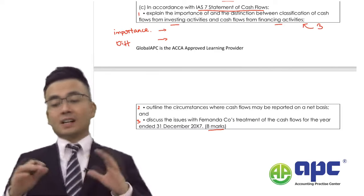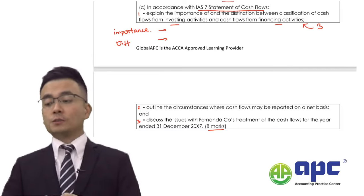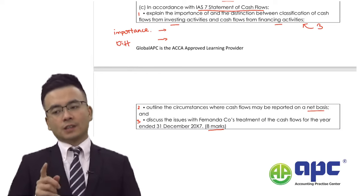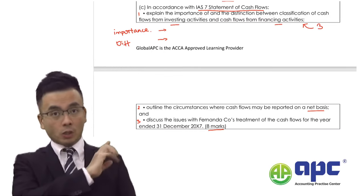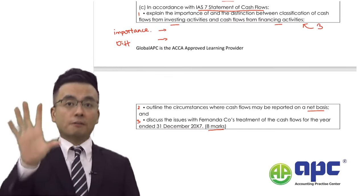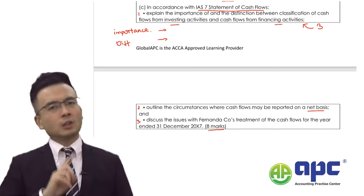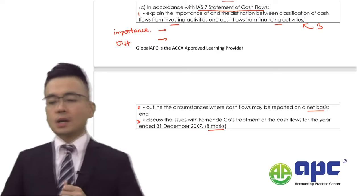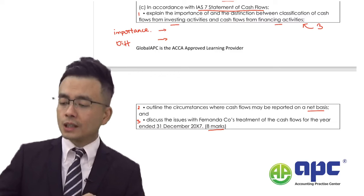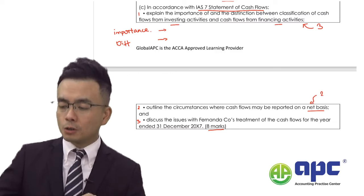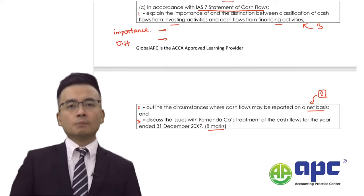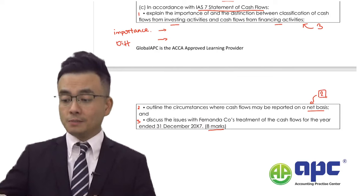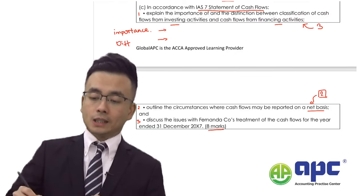Number two is to outline the circumstances where cash flows may be reported on a net basis. If you know the accounting standards, you can write approximately five sentences, but many students are not familiar with the net basis. I would make about two possible points related to number two, because I know net basis is a niche area — there are two easy marks available there.